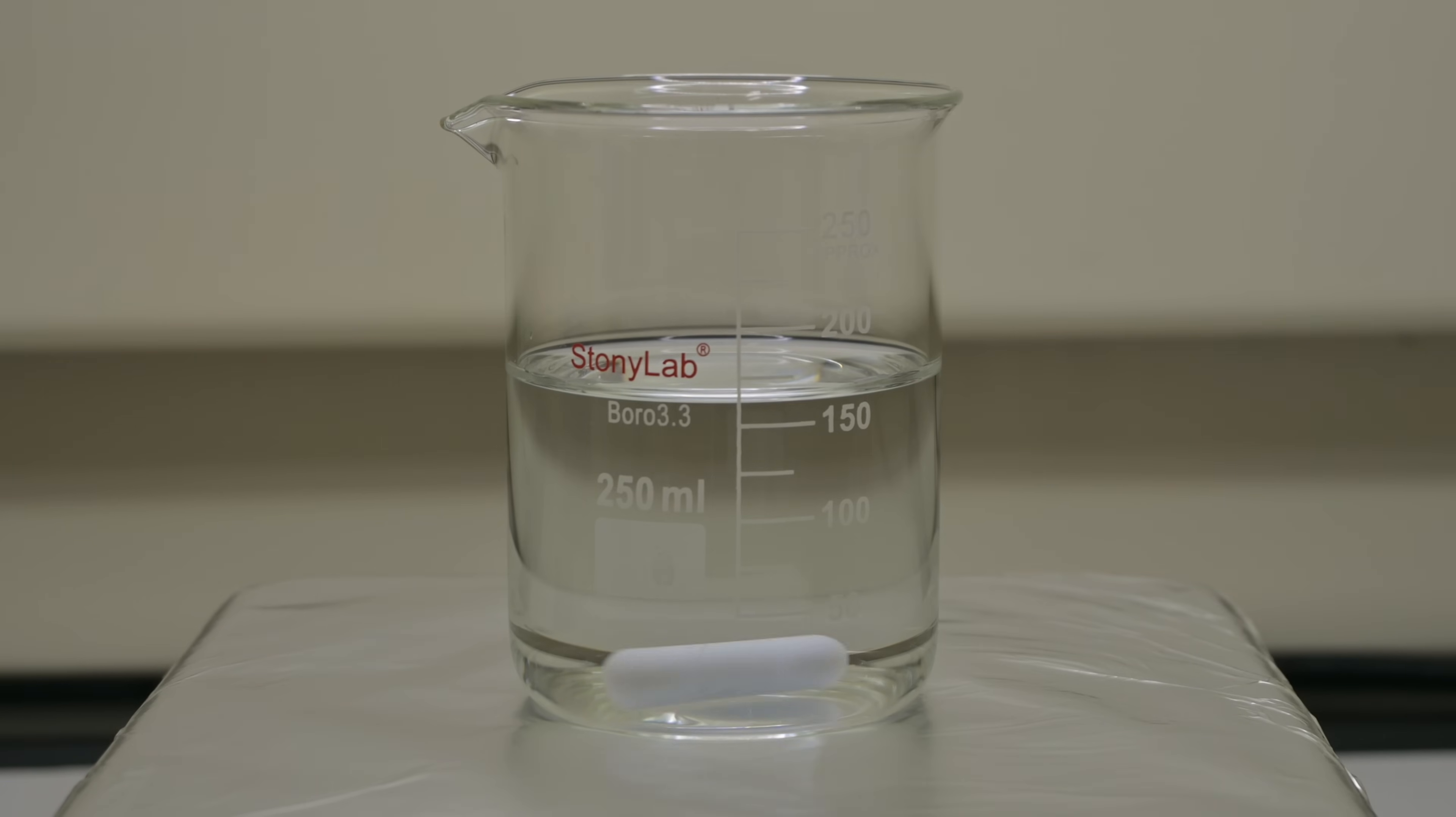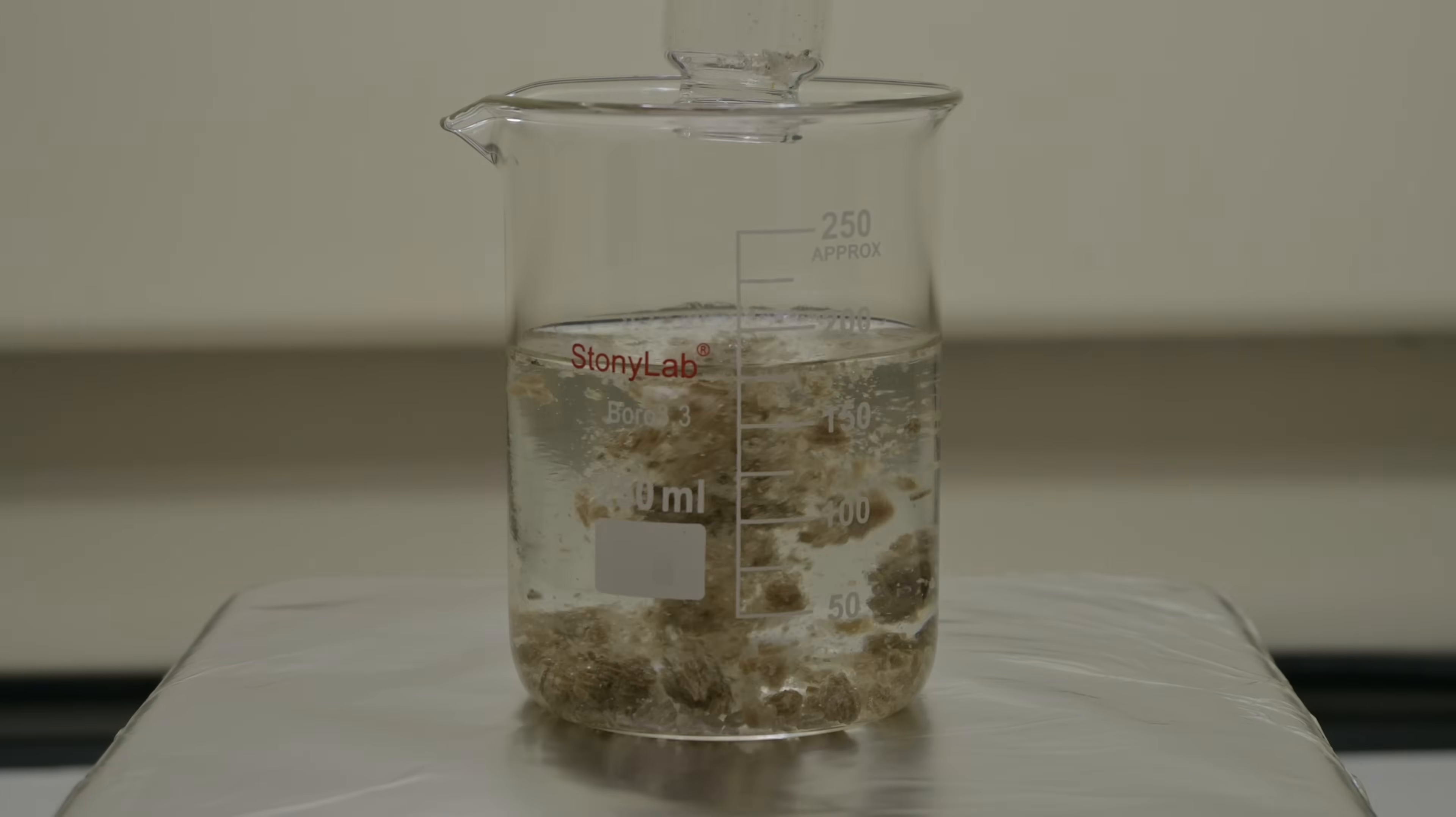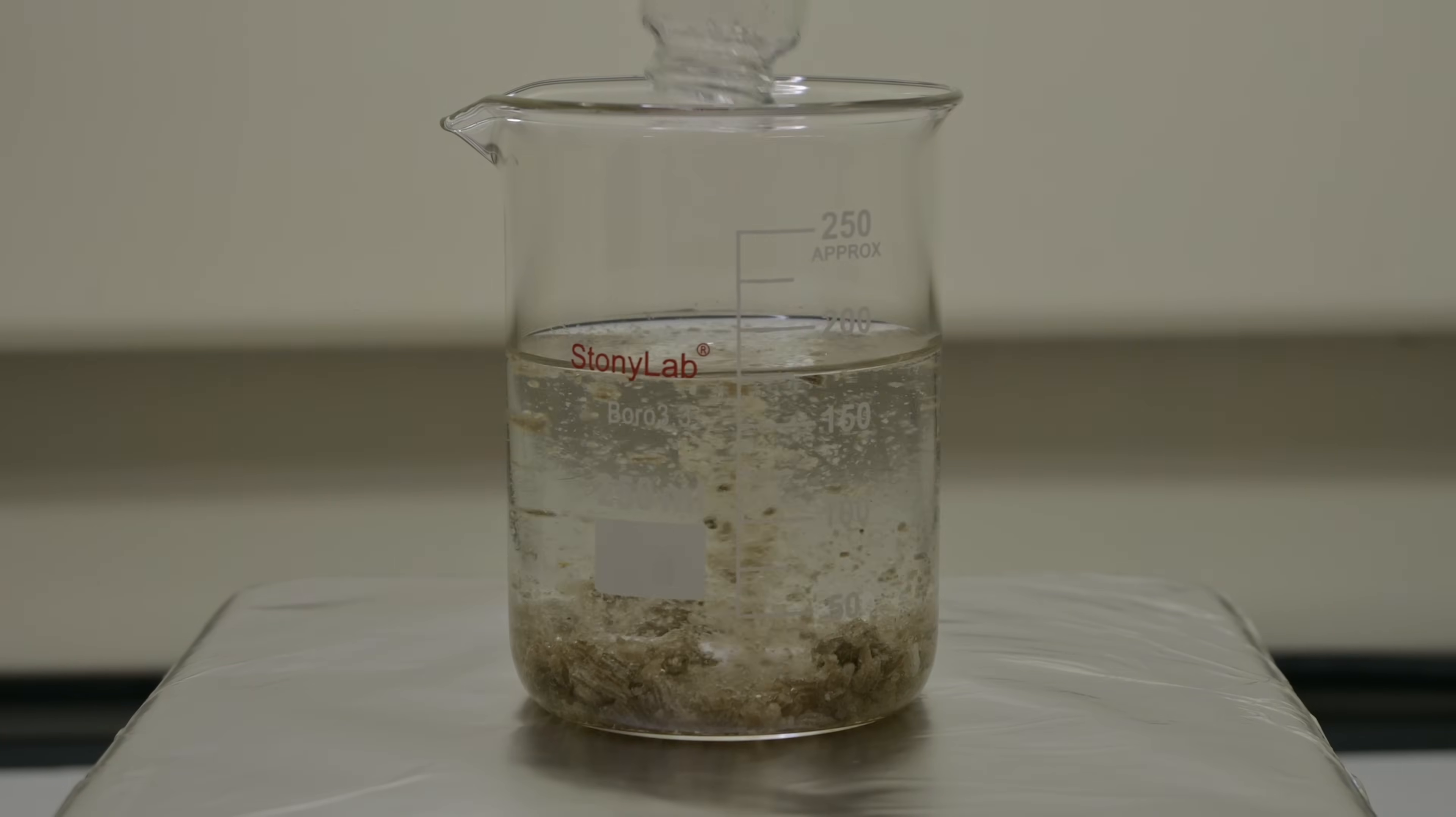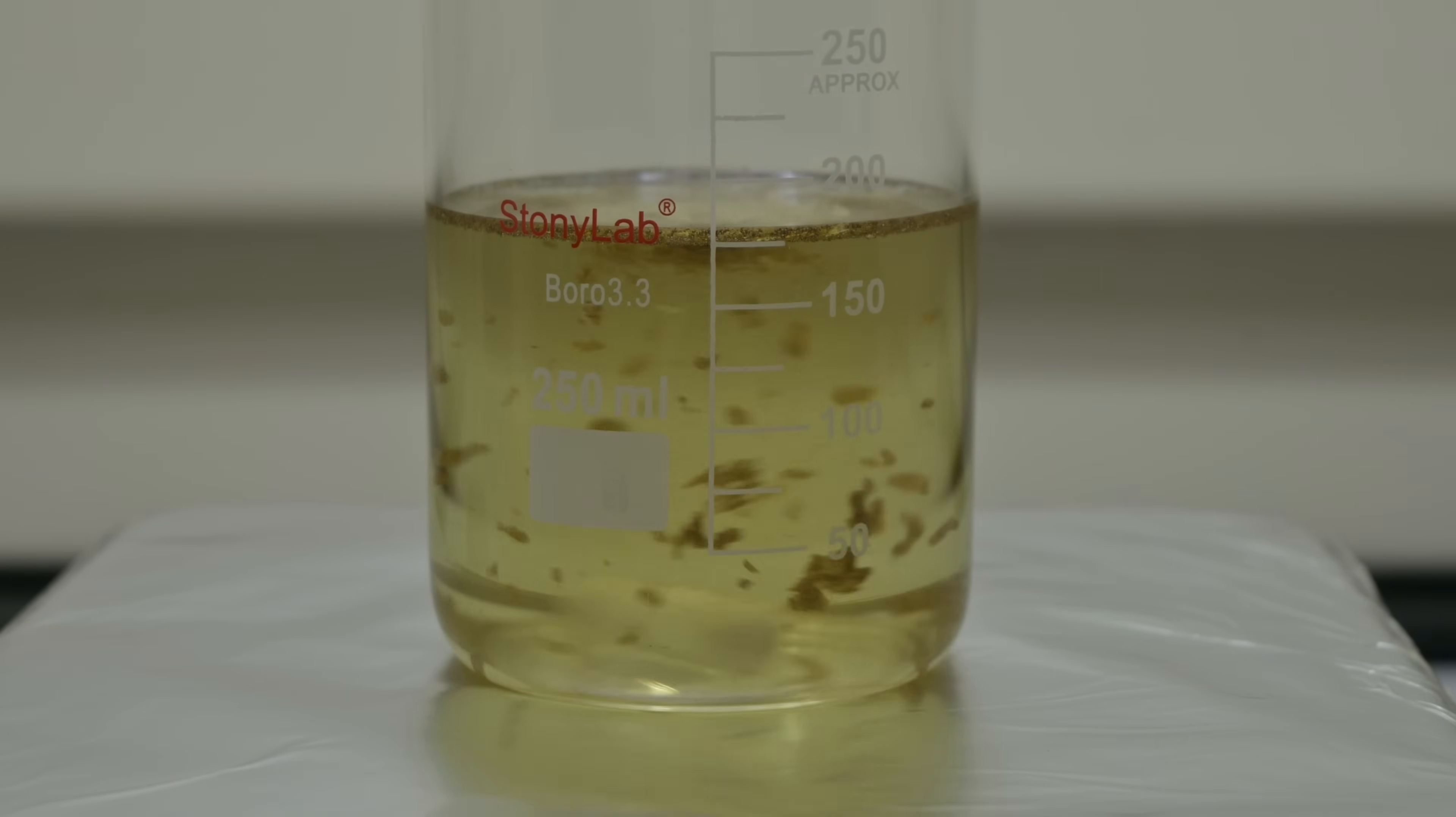I start by adding 6.5 mL of concentrated hydrochloric acid to 175 mL of distilled water in a beaker. Next, I weigh out 7.5 grams of p-toluidine and add that to the beaker. The acid helps dissolve the p-toluidine by reacting with it to form a water-soluble hydrochloride salt. This step is critical, because p-toluidine itself doesn't dissolve very well in water, but once it forms the salt, the amine group becomes protonated and more polar, allowing it to dissolve completely.